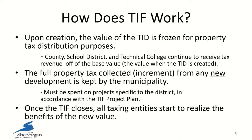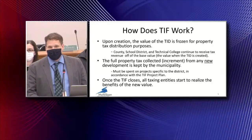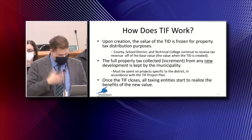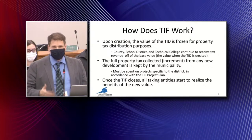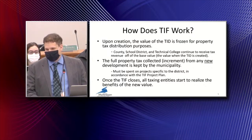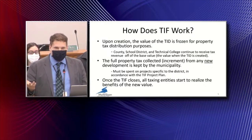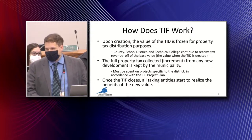So how does TIF work? Upon creation, the value of the TID is frozen for property tax distribution purposes. Whatever the value of that property within that district is at the time of certification by the Department of Revenue, that value is held stagnant, and that's what the city and taxing jurisdictions receive going into the general fund. Any new value created in the district above that then goes into the district and is used to pay down expenditures within the district. When the district closes, all taxing entities start to realize the benefits of the new value. The purpose is really as an economic development tool to revitalize old areas that are vacant, blighted, or underutilized.